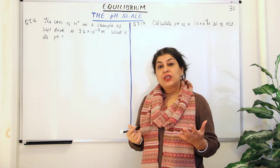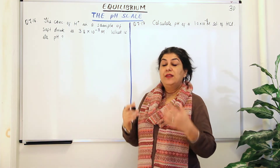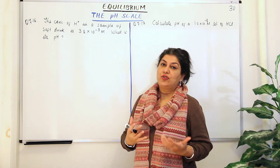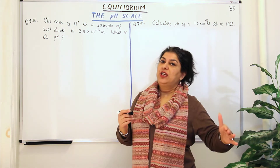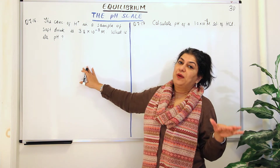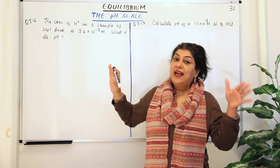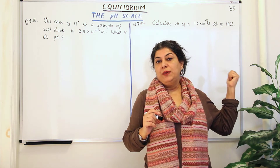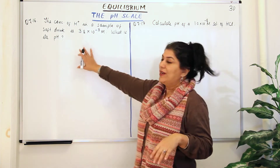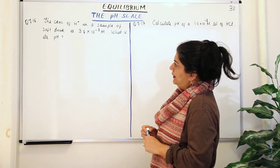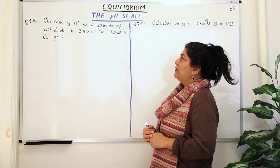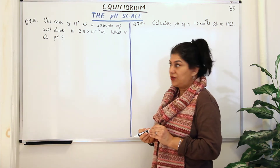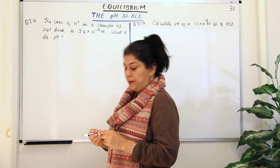When you are not given the hydrogen ion concentration, you are required to first calculate it and then proceed to finding out the pH by taking the negative log of that hydrogen ion concentration — which we will be doing in the next question. So let us first solve this question. The concentration of H⁺ in a sample of soft drink is 3.8 × 10⁻³ molar. What is its pH?